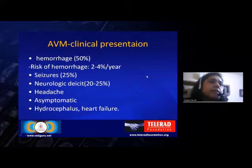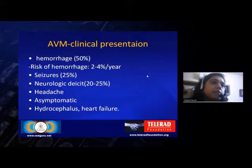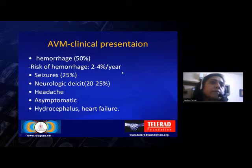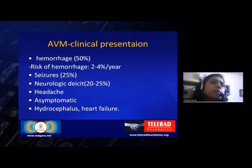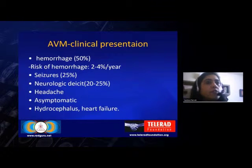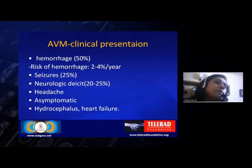Regarding clinical presentation of AVMs, about 50% of cases present with hemorrhage, and the risk of hemorrhage is about 2 to 4% per year. This means that of 100 people with an AVM, about 2 to 4 would have a hemorrhage in one year. The individual's lifetime risk increases with earlier presentation — a person presenting at age 20 has a much higher overall risk than one presenting at 40 or 50.